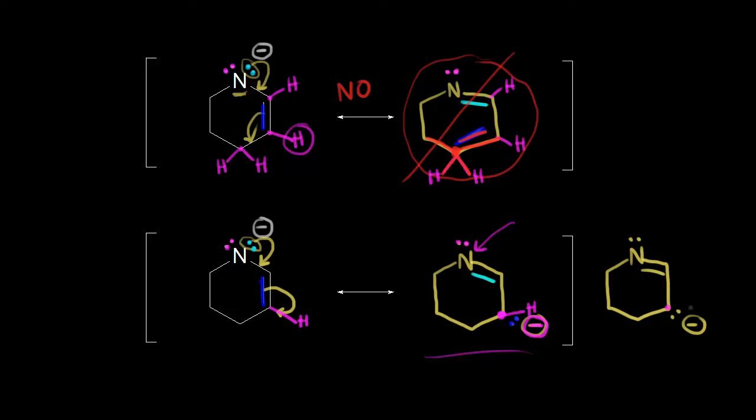If you're having trouble drawing resonance structures, usually the problem is not thinking about your hydrogens — forgetting to put them in. Once you put those in, it's a lot easier to see if your resonance structure is correct. So be careful about that. Resonance structures are just practice — the more you draw, the better you'll get. If you make a mistake, it's not a big deal. You learn from your mistake and keep on practicing.